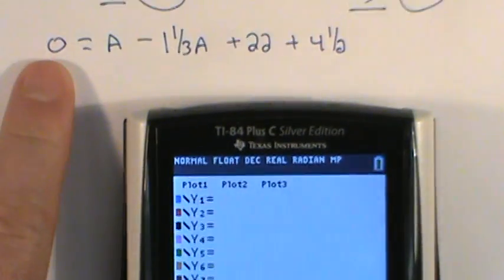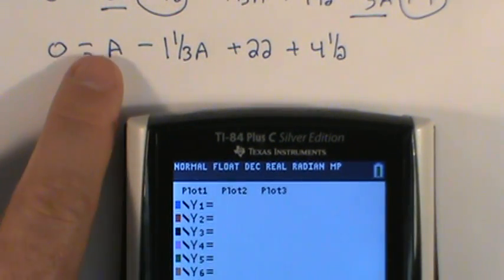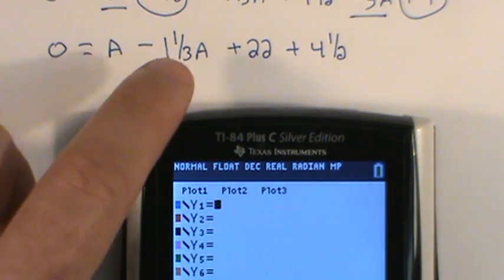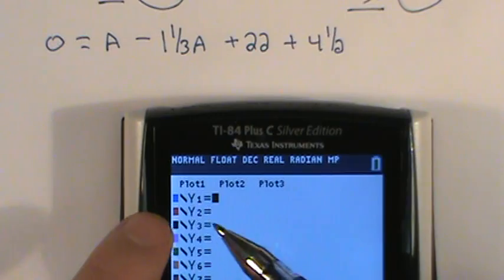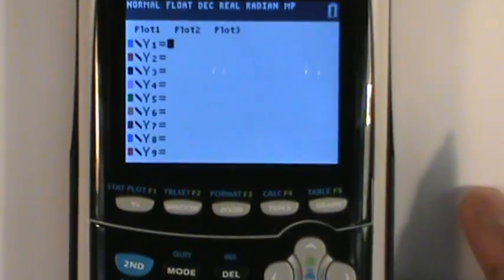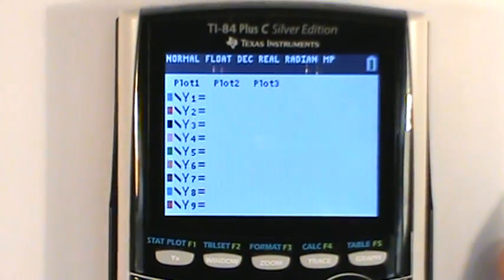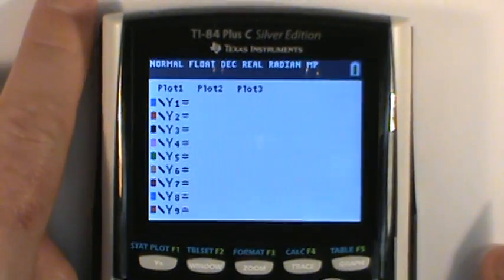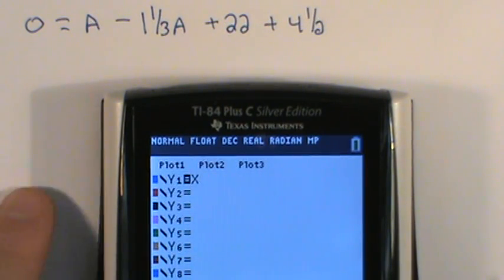I'm interested in this being where it says y. That's my zero. So I'm going to say a minus ⅓a plus 22 plus 4½. But when you enter this in as a y and x equation, your only option is to use an x. You can't use the other letters. So I'm going to type in x because that's my variable. A is my variable, but we're going to use the generic x for everything.